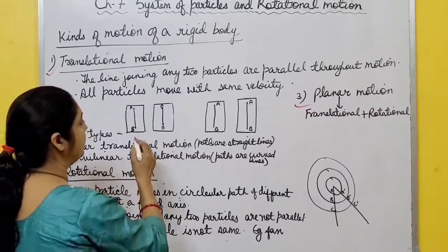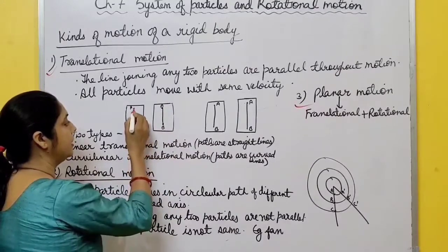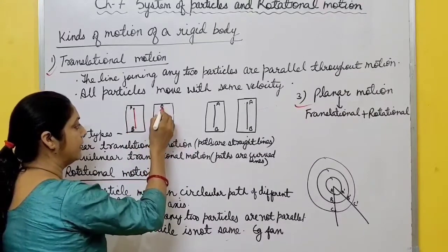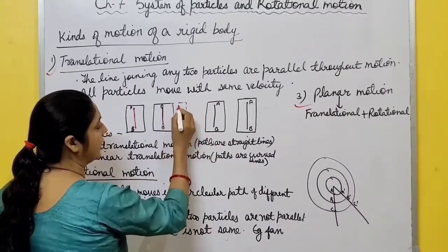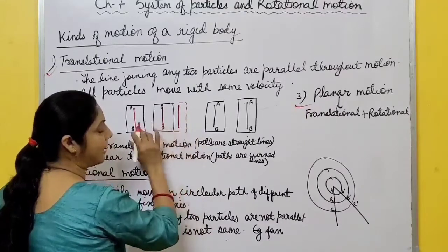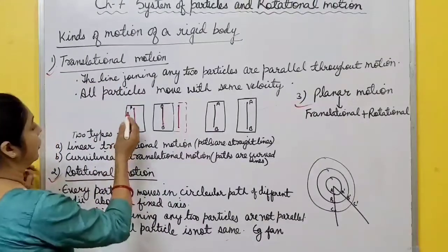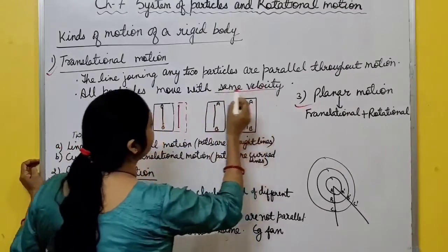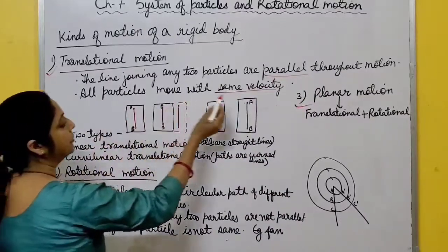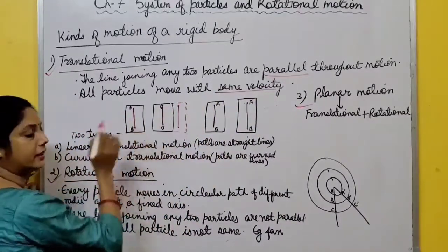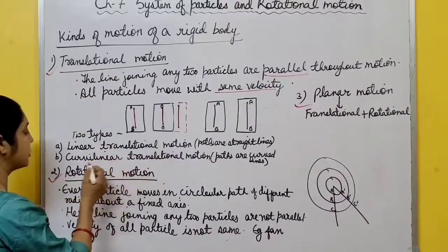After some time, under application of force, the body reaches a new position. If the line joining these two particles is always parallel throughout the motion, this type of motion is called translational motion. All particles move with the same velocity. Two important points: all particles remain parallel throughout the motion, and they move with the same velocity.